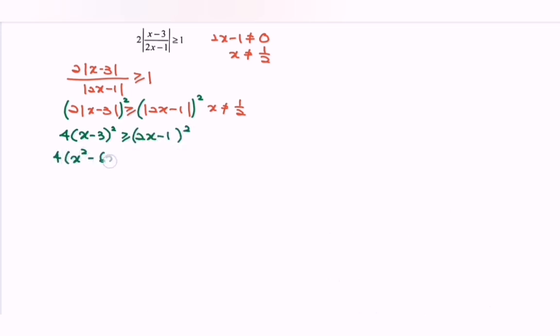This gives us 4(x minus 3) squared, which is 4x squared minus 24x plus 36, greater than or equal to (2x minus 1) squared, which is 4x squared minus 4x plus 1.